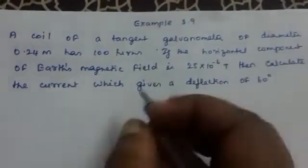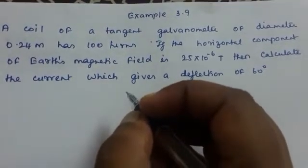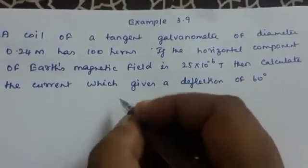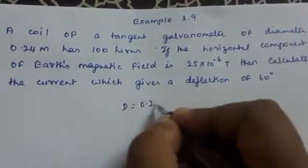Here a tangent galvanometer, the diameter of the tangent galvanometer is given as 0.24 meter. So it is 0.24 meter.